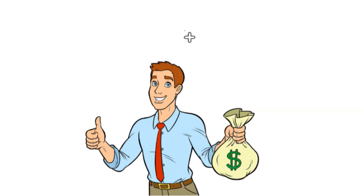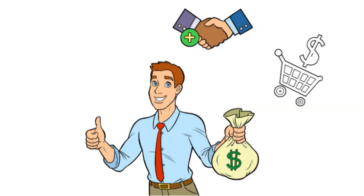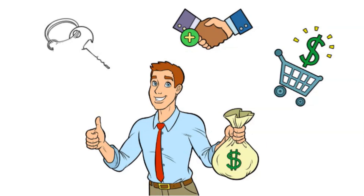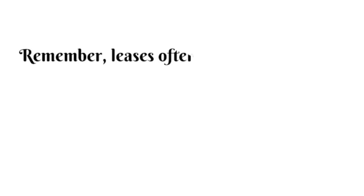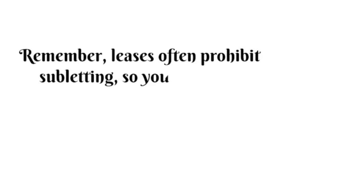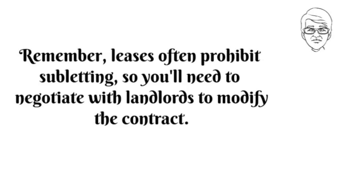Let's talk about rental arbitrage. If you're new to the business, it's the easiest way to get started without owning any property. However, convincing landlords to allow you to Airbnb their property can be difficult — it requires sales and people skills. You need to charm them, understand their needs, and make a compelling pitch. Remember, leases often prohibit subletting, so you'll need to negotiate with landlords to modify the contract. With the right approach, you can become a positive force in the landlord community and secure profitable deals.